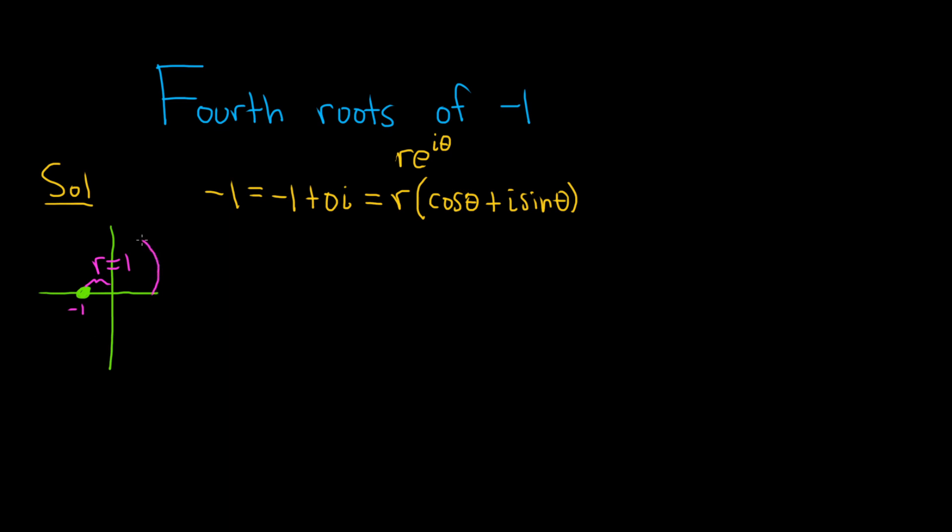And the angle is the angle that's right here. We know that this is 0, this is pi over 2, and this is pi. That means that our argument, that's what it's called, theta, is pi.